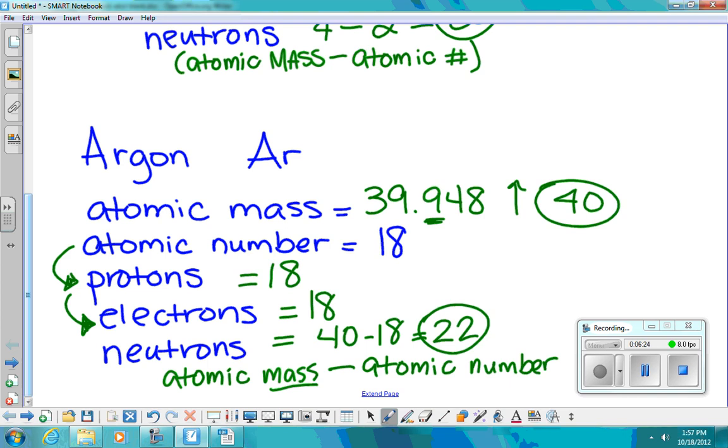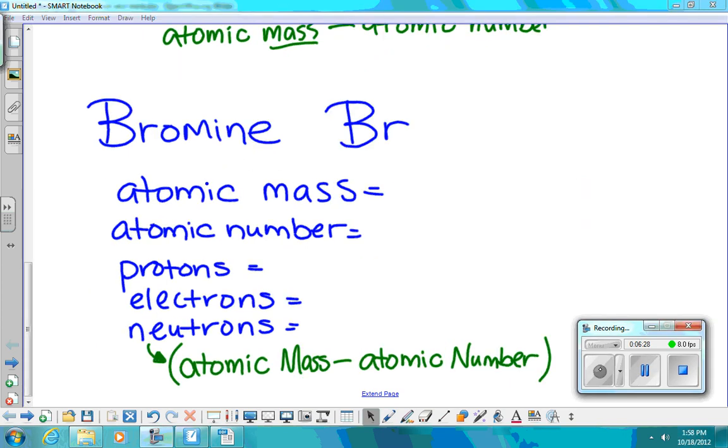We'll do one more together. We're going to do bromine. And bromine has an atomic mass of 79.904. And again, if you look at that first digit after the decimal, in this case it's a 9, that tells me we're going to round up. So now I'm going to be at 80.